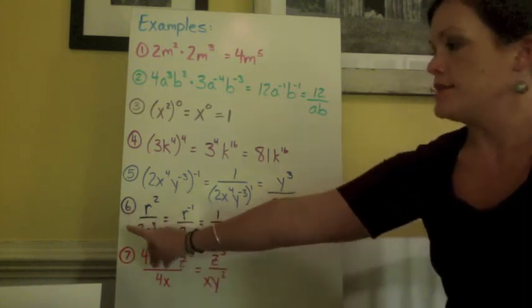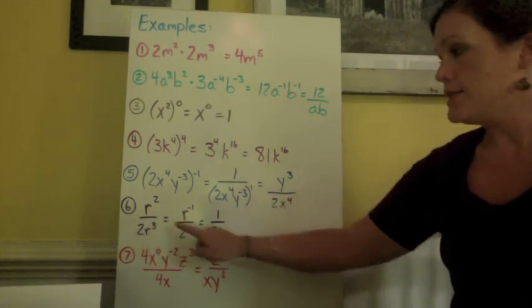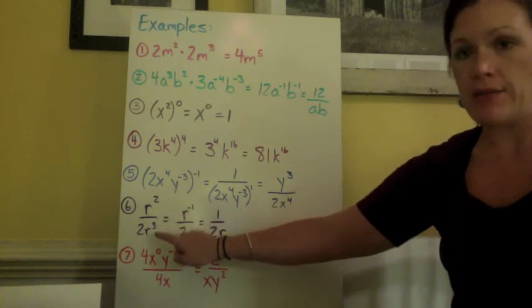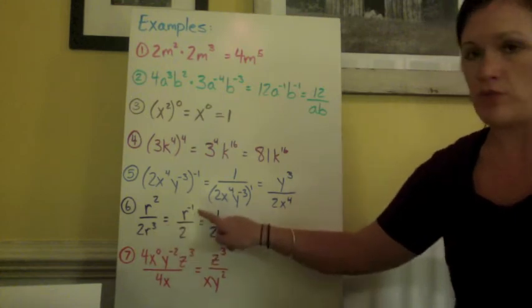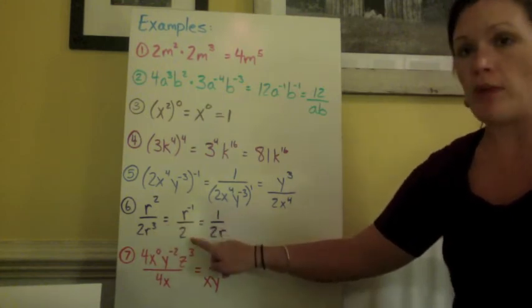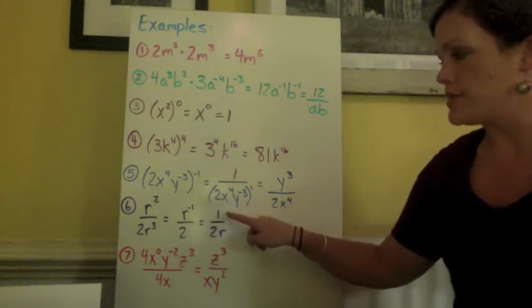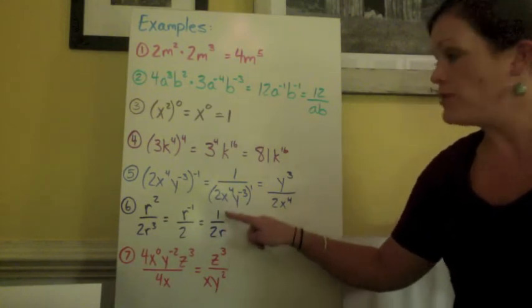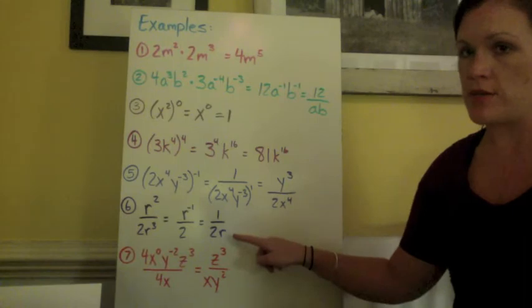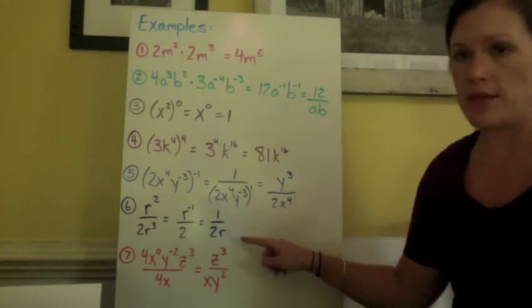In my next example, I have r squared over 2r cubed. I need to subtract. This is dividing powers. So I have r squared and r cubed. 2 minus 3 would be negative 1. Leave the 2 on the bottom. But we do need to fix the negative 1 power. So we need to rewrite this expression as 1 over 2 times r. Without the 1, this would be incorrect because 2r and 1 divided by 2r are not the same.